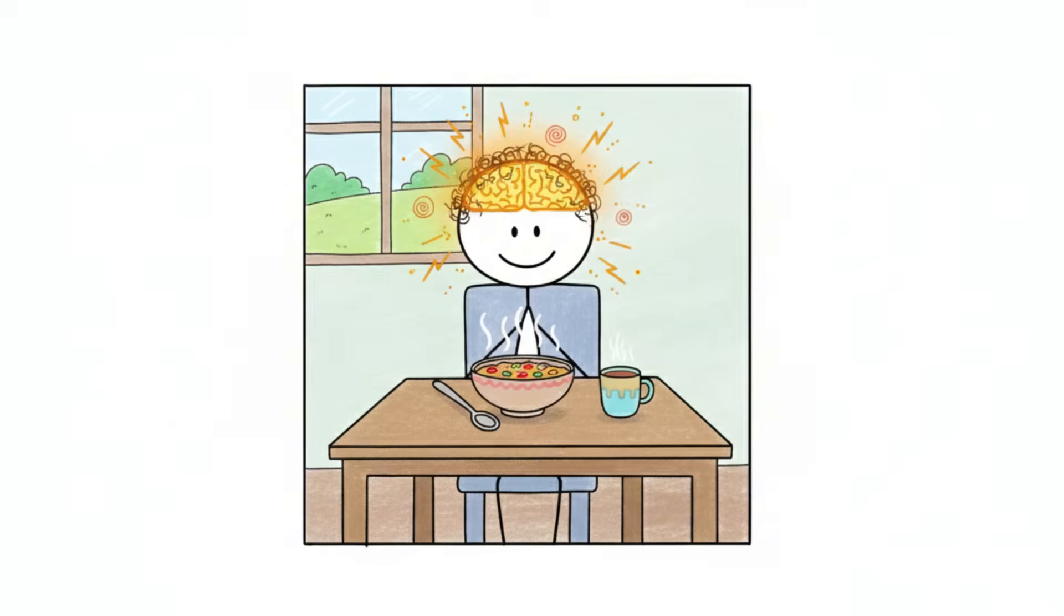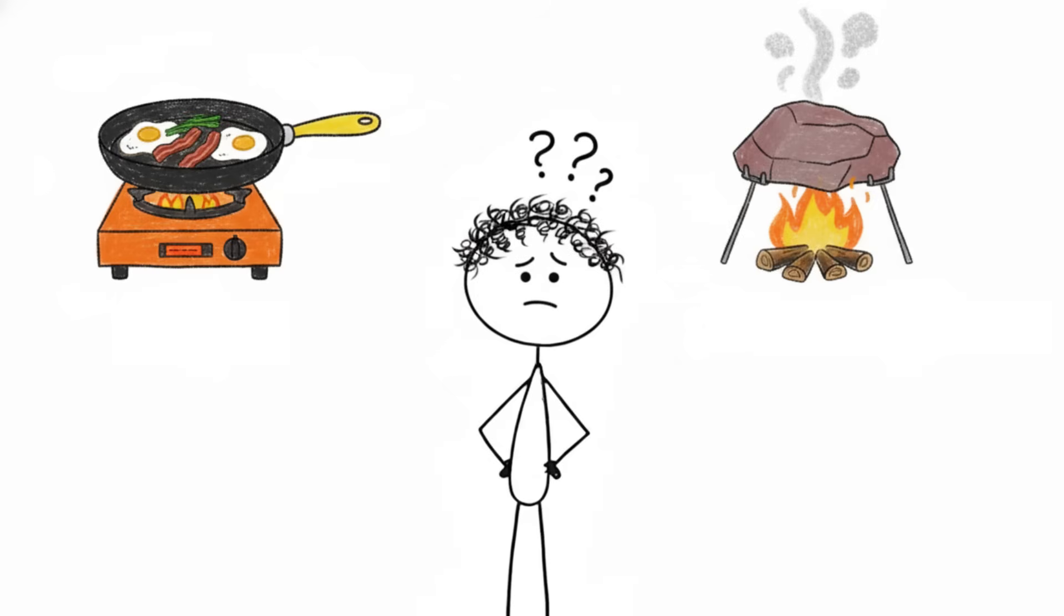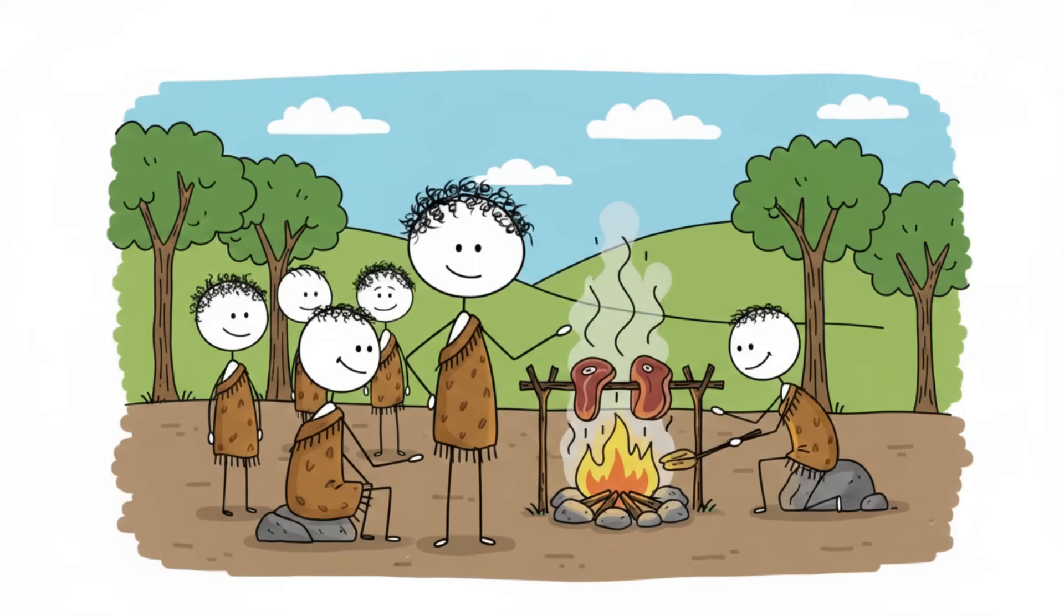Our brains, these massive power-hungry supercomputers that burn about a fifth of your daily calories, couldn't have evolved without someone inventing a skillet, or at least heating up a rock. You owe your intelligence, your language, and your ability to watch YouTube videos to a perfectly cooked steak.